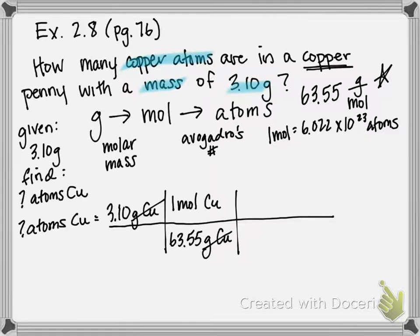Now I'm in moles and from moles I want to go to atoms. So I'm going to use Avogadro's number. What I want to cancel goes on the bottom, so it's going to be 1 mole copper, and on the top is my super large number of atoms, 6.022 times 10 to the 23rd atoms of copper.